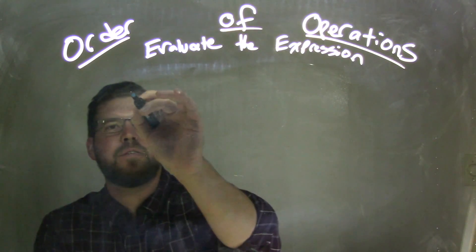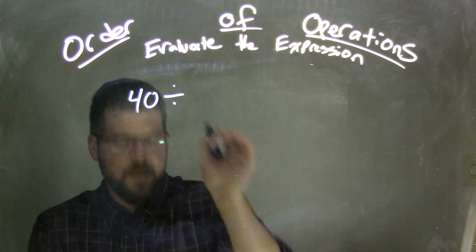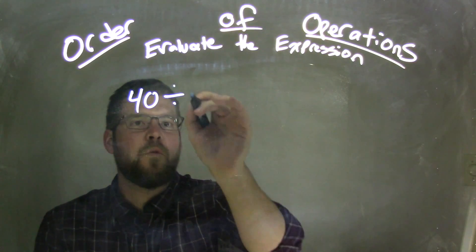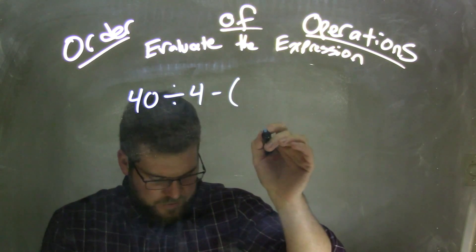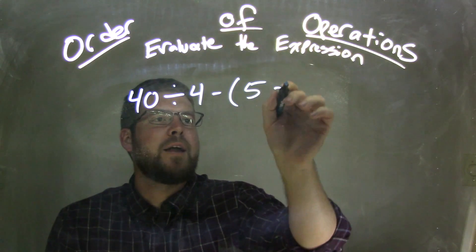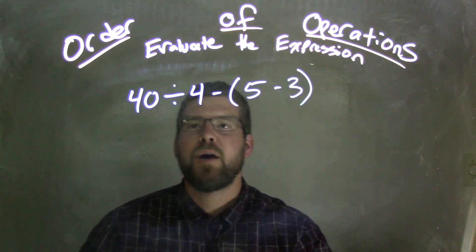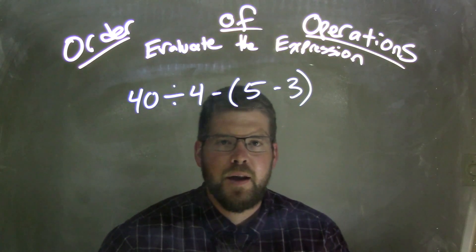If I was given this expression: 40 divided by 4 minus 5 minus 3. So I have 40 divided by 4 minus parentheses 5 minus 3.